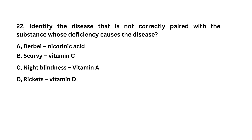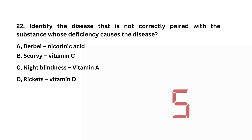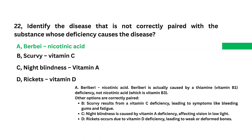Identify the disease that is not correctly paired with the substance whose deficiency causes it. Pellagra — nicotinic acid; scurvy — vitamin C; night blindness — vitamin A; rickets — vitamin D. Pellagra — nicotinic acid is the answer.